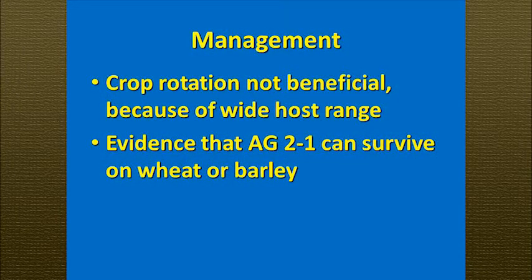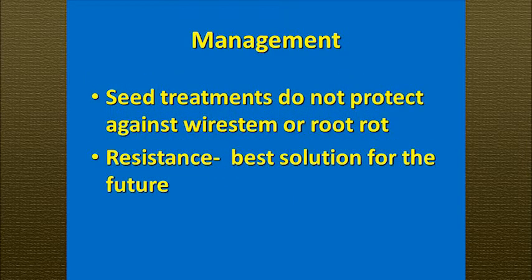Management options are pretty limited for Rhizoctonia at this time, although it's quite widespread throughout the Northwest. Crop rotation is generally not very beneficial because AG2-1 really likes canola, and while populations will decline without a canola crop, it's a really good saprophyte — it can survive on residue and weakly on other host crops like wheat or barley. Seed treatments are somewhat beneficial for seedling damping off, protecting seeds from seed rot, but beyond that phase — post-emergence damping off, wire stems, and subsequent root rotting — there's really not a lot of protection. Probably our best solution for the future will be some sort of resistance, which Dr. Scott Halbert at WSU has been working on with his graduate students.